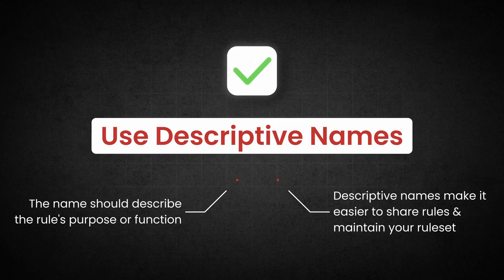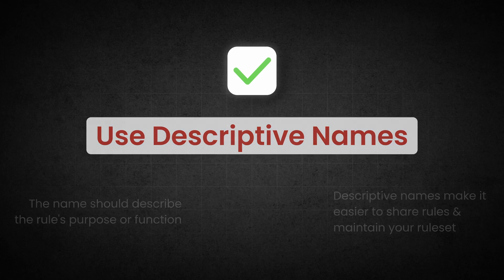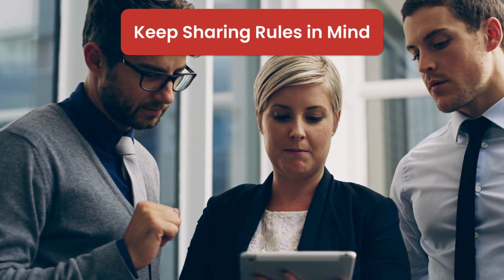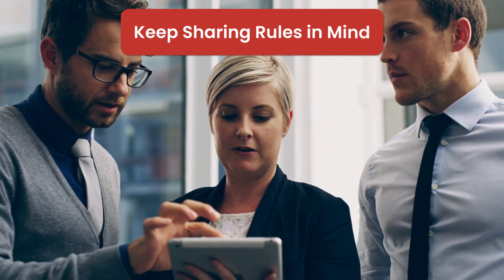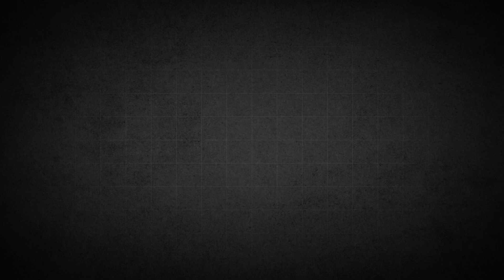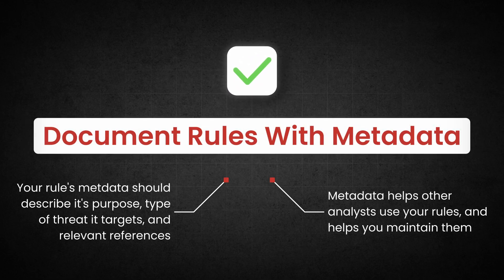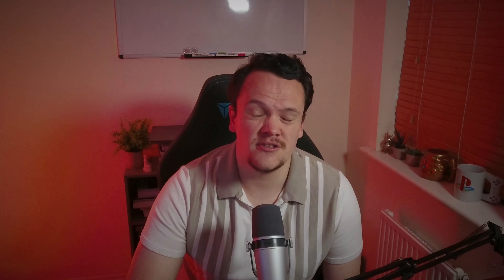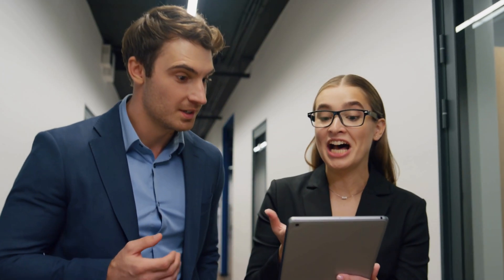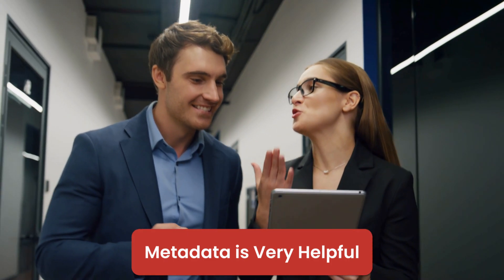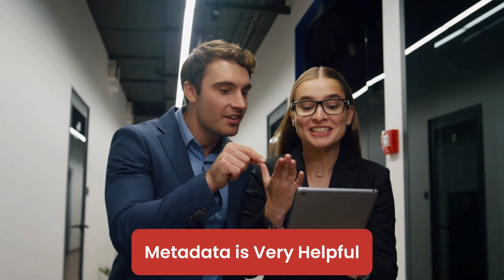Also, use descriptive names that clearly describe the purpose or functionality of your YARA rule. Using generic names or numbers is useless if you intend to share it with the wider community, and makes your rules harder to manage as your rule set grows. Document your rules with metadata and include it in every rule you write. It should always describe the rule's purpose, the type of threat it targets, and any relevant references or sources. This data will help other analysts — and future you — understand and use your rules effectively.